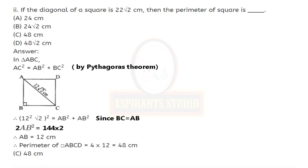Since it is a square, all sides are equal, so instead of BC we substitute AB. Now 12√2 squared can be written as 12 squared times √2 squared. 12 squared is 144 and √2 squared is 2, giving 2 times AB squared equals 144. Bringing 2 to the other side: AB squared equals 144 upon 2, so 2 cancels and AB equals 12 cm.